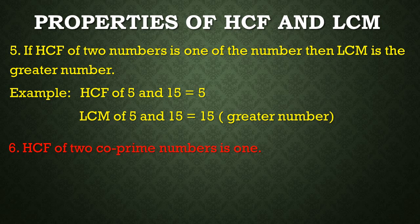Sixth property: HCF of co-prime numbers is 1. Let's recall co-prime numbers. Two numbers are said to be co-prime numbers when they have only 1 as a common factor. For example, 5 and 9 are co-prime numbers because they have only 1 as a common factor. So the HCF of 5 and 9 is equal to 1.